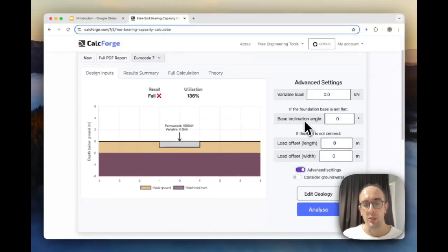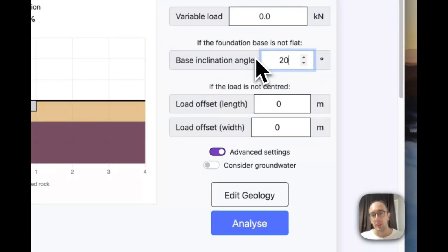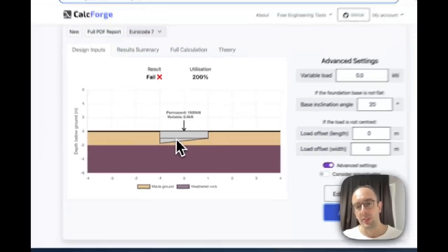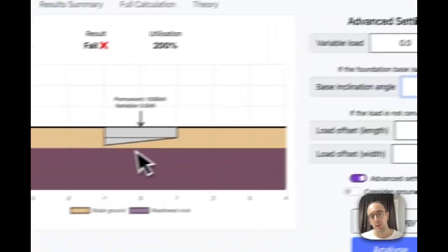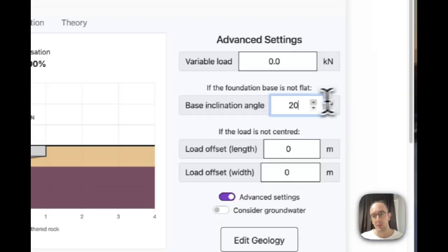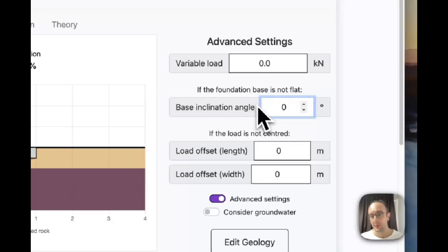I can also click here advanced settings and I can change some other stuff. So I can add a variable load. I can make the base so that it's not flat, I can make it so that this is angled like 20 degrees let's say. You'll see here I've started to slope the base and the utilization's got worse because it's sort of forcing the earth on one side to take more of the force than the other side.